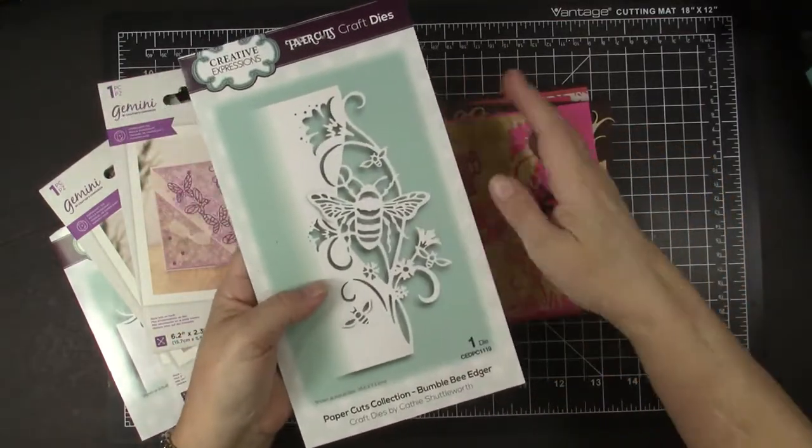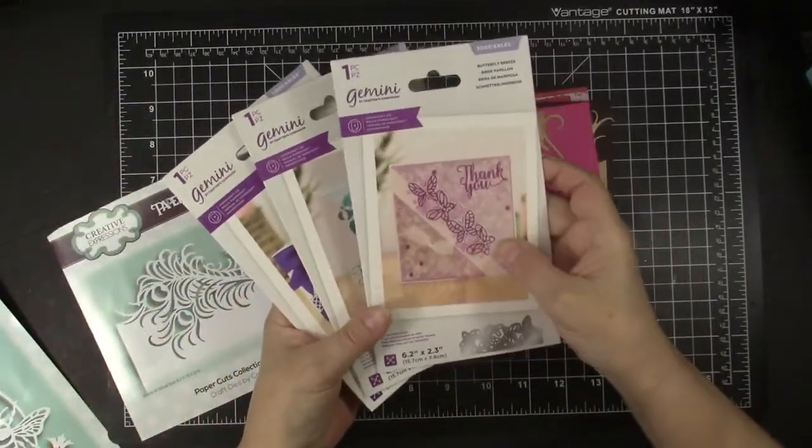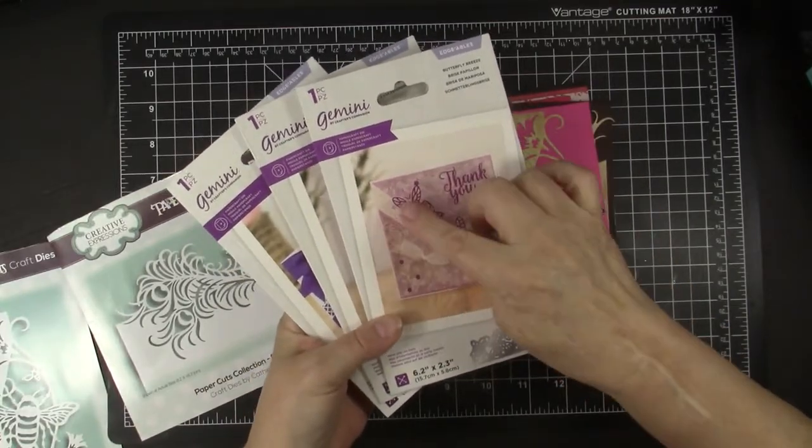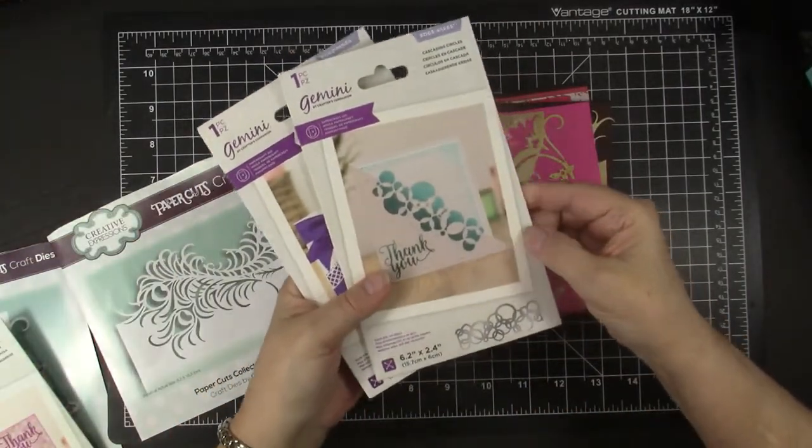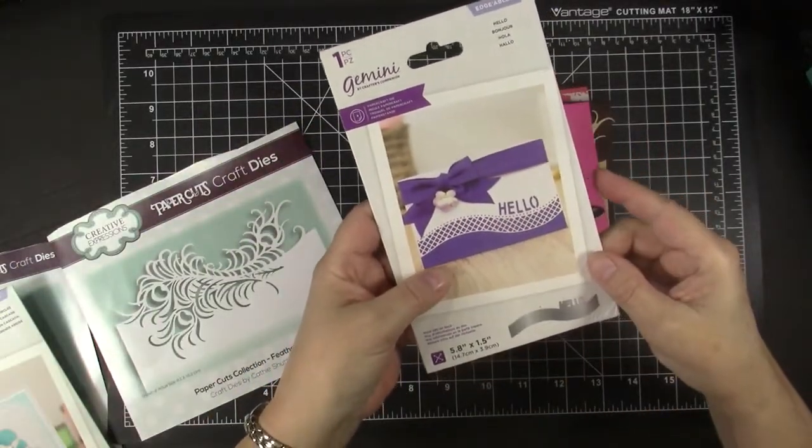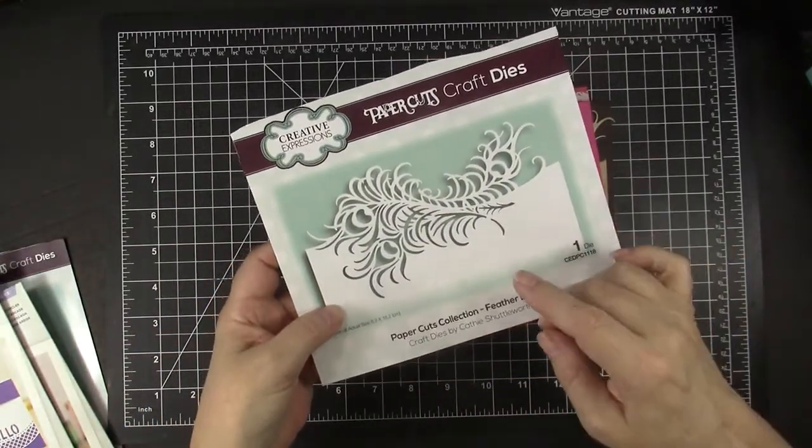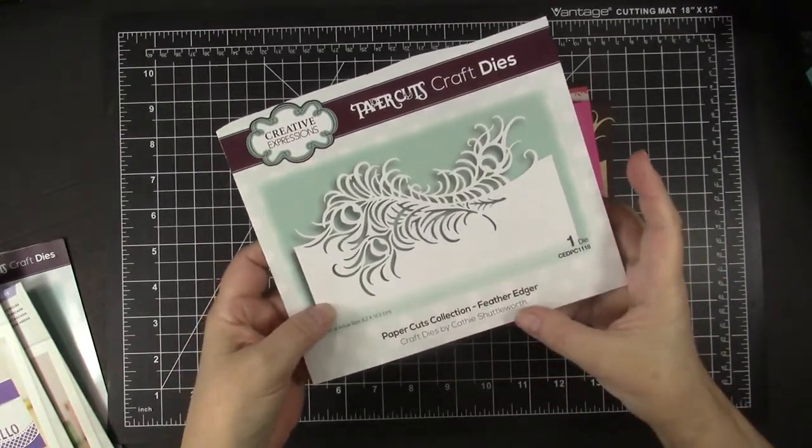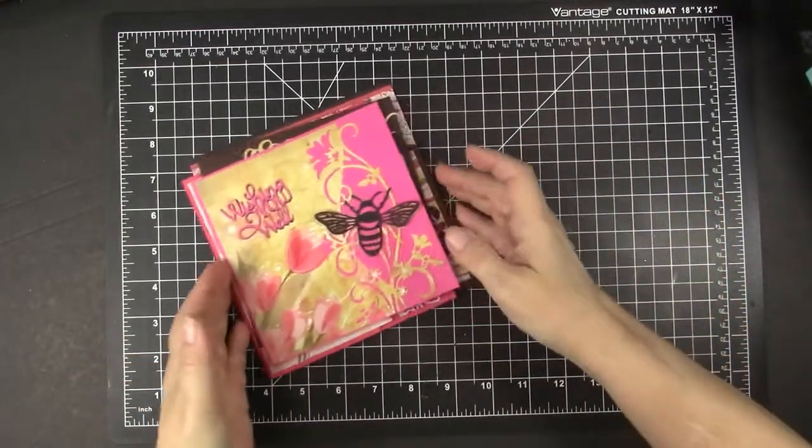I'll show you each of the cards individually. I also have three new edger dies from Gemini, Crafters Companion Edgeables. This one is the Butterfly Breeze, this one is the Cascading Circles, and this one is the Hello Edgeable die. And then the last one I'm going to show is the Creative Expressions Feather Edger, again by Kathy Shuttleworth. So those are the dies that I'm using on the cards that I'm going to share.